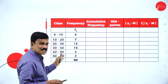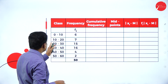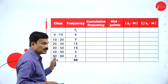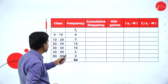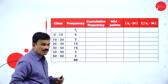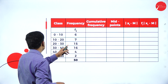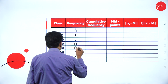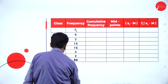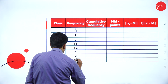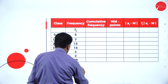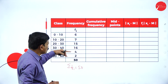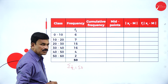Let us represent this in a table. The class intervals are 0 to 10, 10 to 20, 20 to 30, 30 to 40, 40 to 50, 50 to 60. The frequency f is 6, 7, 15, 16, 4, 2. If you add all these values, sigma f is equal to 6 plus 7 plus 15 plus 16 plus 4 plus 2, which is equal to 50.